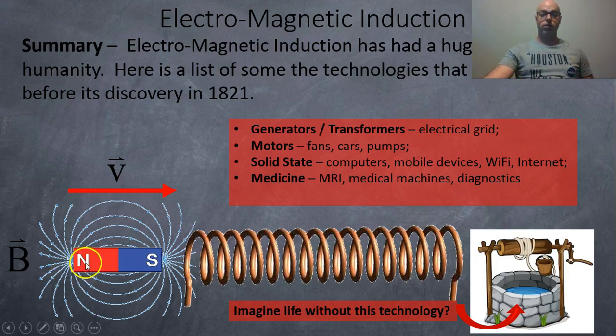So once again, to induce a current, you just push a magnet through or by a coil. And because of that, we've got things like generators and transformers for our electrical grid, so we can have electrified cities and homes. And then that allows us to have motors for fans, cars, pumps, air conditioners, all these amazing things.